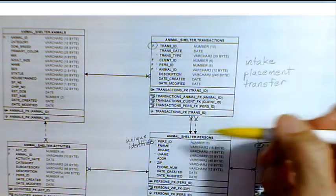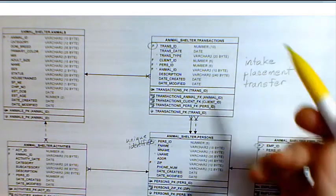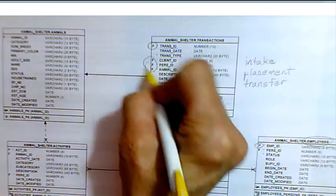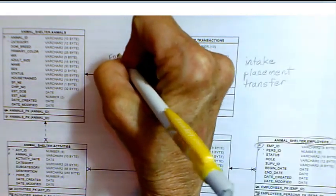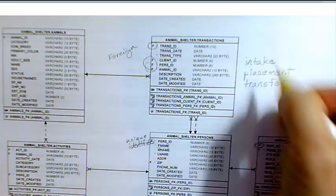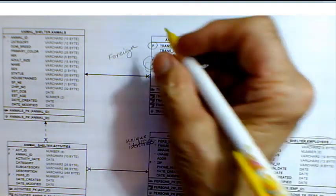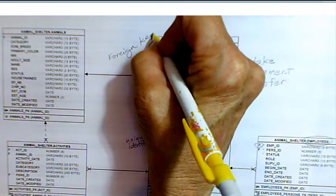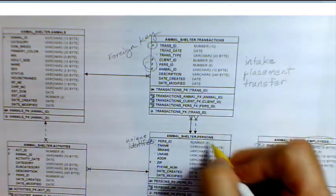We'll know which employee processed this transaction because of the foreign key, which is very important. This is the basis for the relationship, these lines between the tables: the foreign key.